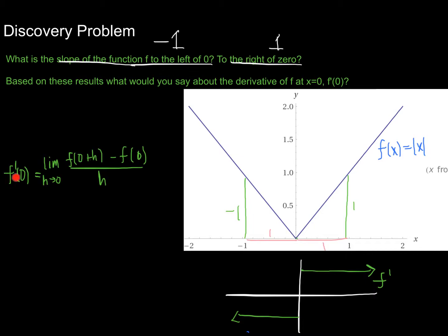This is how we calculate the derivative at any point: the limit as h approaches 0 of [f(0 + h) − f(0)] / h. We think of this as the average rate of change or the slope of the secant line. We're taking point f(0), then using another point f(0 + h), and as h approaches 0, this point gets closer and closer to f(0). Notice that if we're creeping in from the right, h is approaching 0 from the positive side — h will be very small positive values. As it gets closer and closer to 0, we're getting closer to this point.